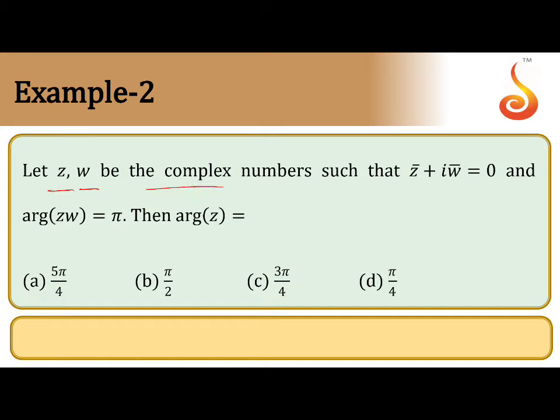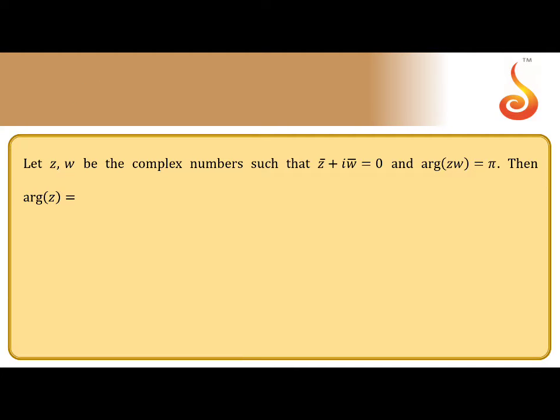Let z, w be complex numbers such that z̄ + iw̄ = 0 and argument of zw is π, then argument of z they are asking. So given that the first data, and using these two datas.